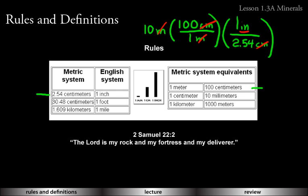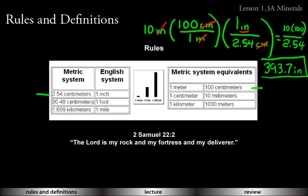Now for multiplying, we would be doing 10 times 100, which is 1000, over 2.54, and so that would equal 393.7 inches. That's how many inches are in 10 meters. So I had to use two unit multipliers — that's the same thing as a conversion factor. Sometimes they're called unit multipliers.